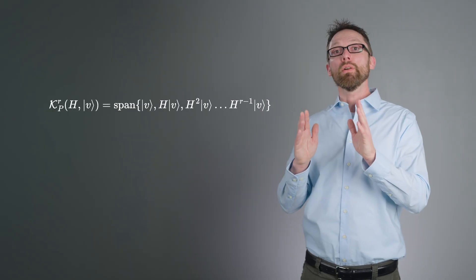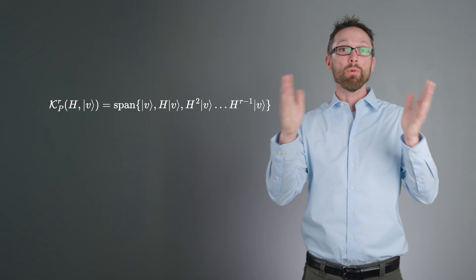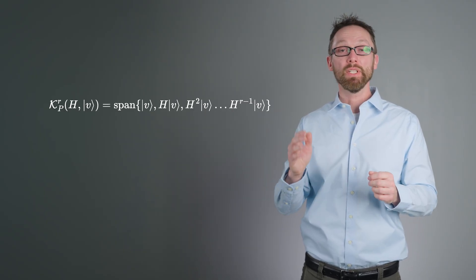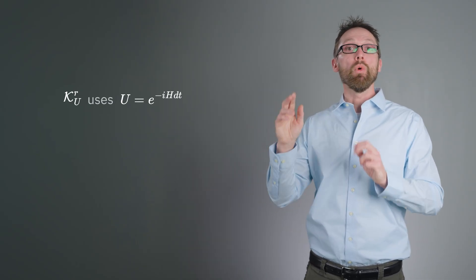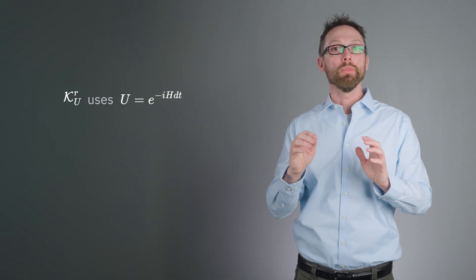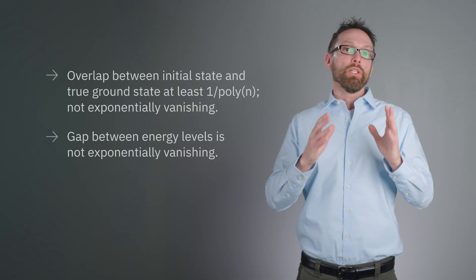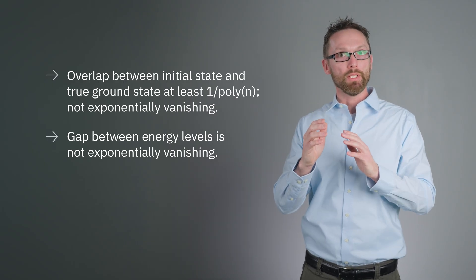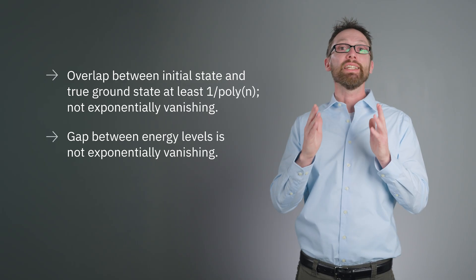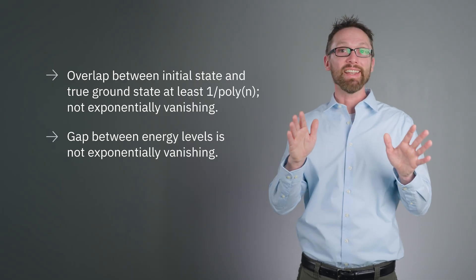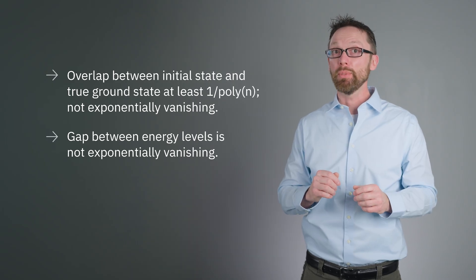Let us call the Krylov subspace of order r that we generated in the classical context, using powers of h directly, the power Krylov subspace. Now we generate a similar space using the unitary time evolution operator u given by the exponential of negative i ht. We'll refer to this as the unitary Krylov subspace. The power Krylov subspace that we use classically can't be generated directly on a quantum computer, as h is not a unitary operator. Using the unitary Krylov subspace can be shown to give similar convergence guarantees as the power Krylov subspace. Specifically, the ground state error converges efficiently as long as the initial state v has overlap with the true ground state that is not exponentially vanishing, and as long as there is a sufficient gap between eigenstates.